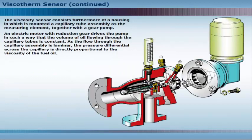The viscosity sensor consists furthermore of a housing in which is mounted a capillary tube assembly as the measuring element, together with a gear pump. An electric motor with reduction gear drives the pump in such a way that the volume of oil flowing through the capillary tubes is constant. As the flow through the capillary assembly is laminar, the pressure differential across the capillary is directly proportional to the viscosity of the fuel oil.